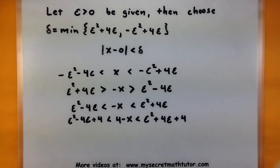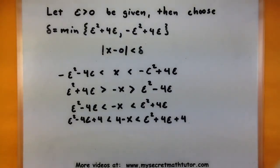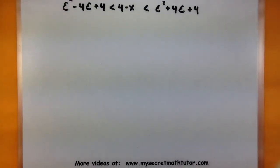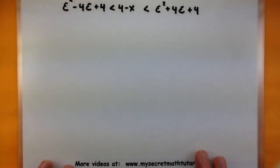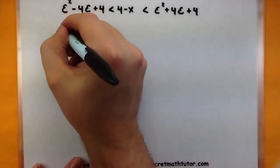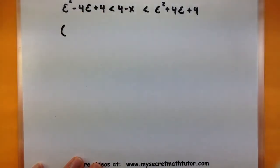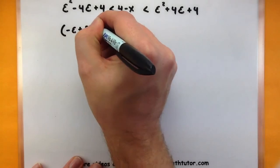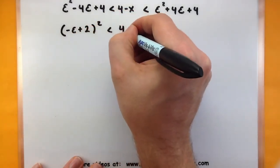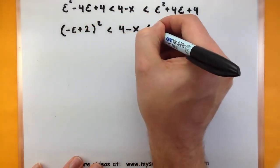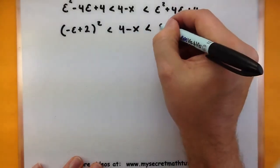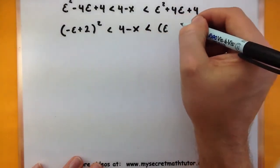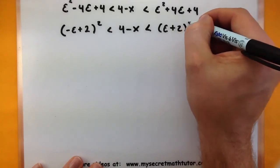Looks great. We can keep going and factor both sides. Remember to check your work to see how we should factor this. So over on the left side, this is a negative epsilon plus two squared. And on the other side, epsilon plus two squared.